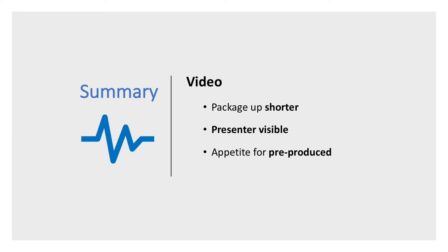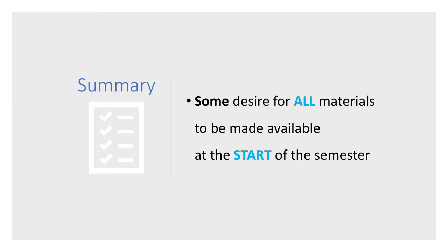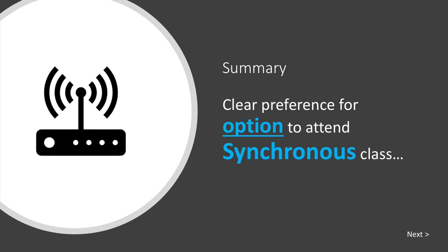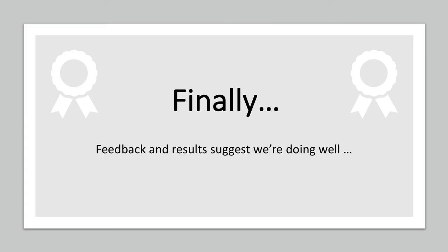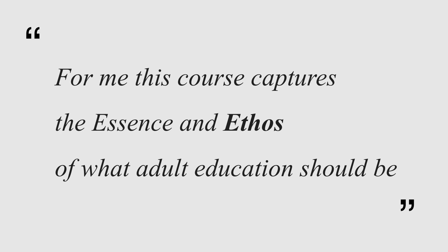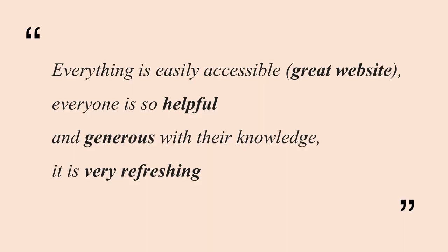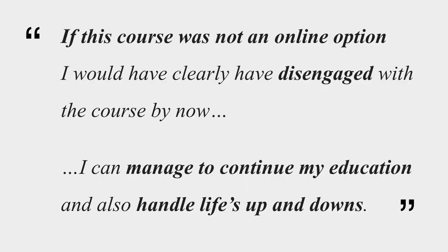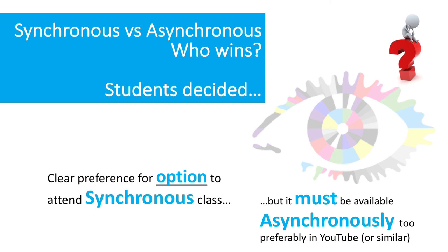In summary: for video, package it shorter, make the presenter visible, and there's an appetite for pre-produced videos. For live talks and lab sessions, no time suits everyone; some desire all materials available at the start of the semester. But the big finding is a clear preference for an option to attend synchronous classes — but it must be available asynchronously too, preferably on YouTube or similar. Feedback and results suggest we're doing pretty well. So synchronous versus asynchronous — who wins? Students decided: a clear preference for the option to attend synchronous class, but it must be available asynchronously too, preferably on YouTube or similar. Thanks for listening.